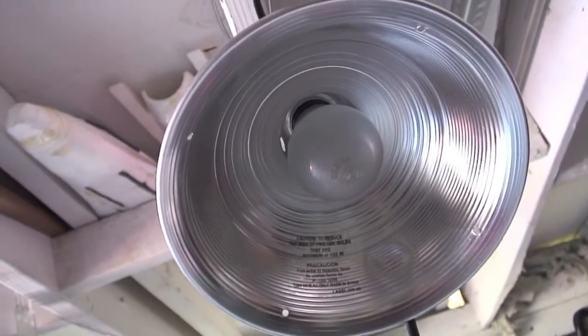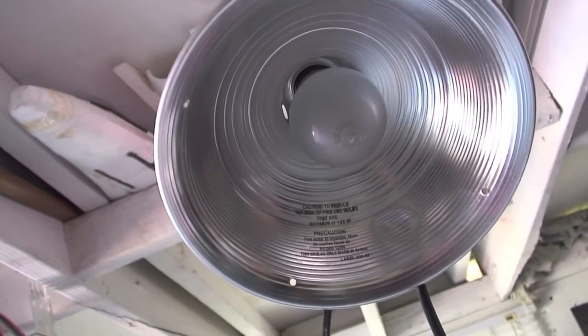First up is a 60 watt traditional light bulb. We're going to see how much wattage this bulb actually pulls. We're going to switch it on.